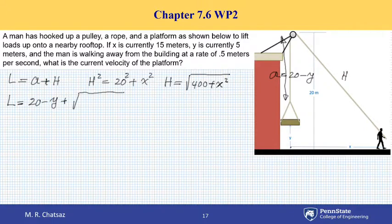So total length of the cable is A plus H or 20 minus Y plus H, which is square root of 400 plus X squared. So now I have the position function or the relationship that we call the constraint equation.